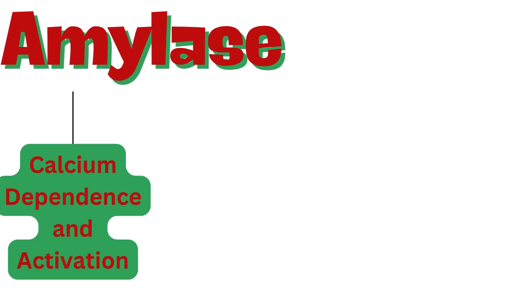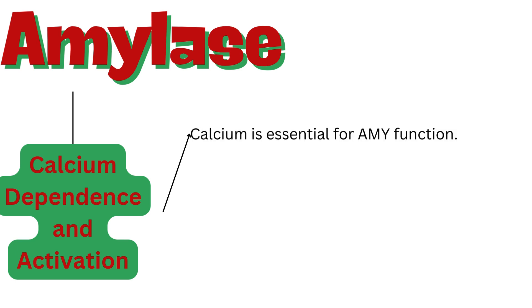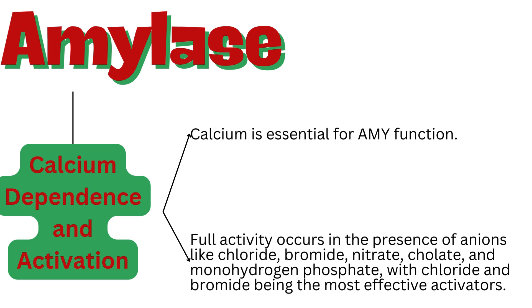Amylase requires calcium for its function and is activated by specific anions. Calcium is essential for AMY function. Full activity occurs in the presence of anions like chloride, bromide, nitrate, chelate, and monohydrogen phosphate, with chloride and bromide being the most effective activators.